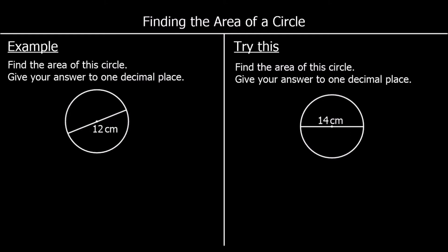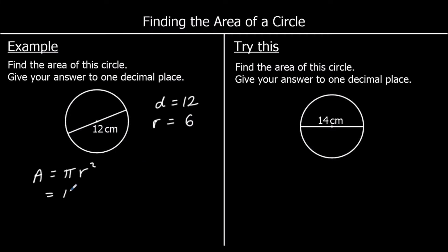Here's another question. This time we haven't been given the radius of the circle — we've been given the diameter. The question says give your answer to one decimal place. So if the diameter of a circle is 12 centimetres, the radius is half of the diameter, so half of 12 is 6. The radius from the centre to the circumference is 6 centimetres. The area of a circle is pi times the radius squared, and the radius is 6, so it's pi times 6 squared.